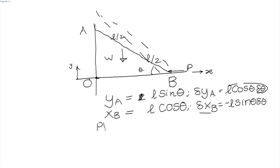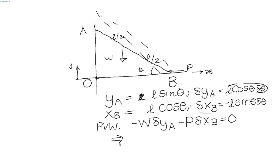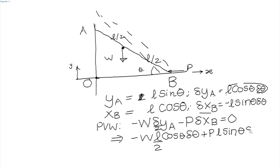Using the principle of virtual work: y is upwards is positive, so W downwards contributes minus W · delta y_A. P is on the other side, so minus P · delta x_B equals 0. This gives minus W · (L cos theta / 2) · delta theta plus P · L sin theta · delta theta equals 0. Since this is true for any arbitrary delta theta, we immediately get our answer.